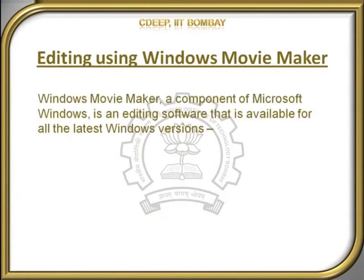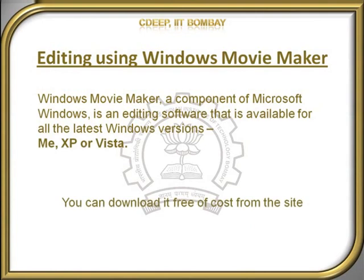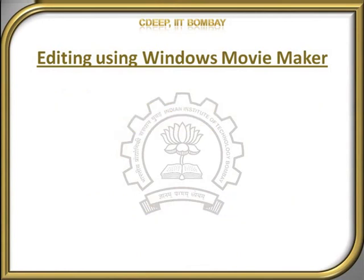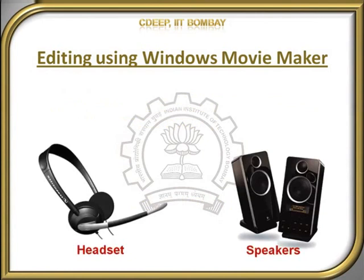Windows Movie Maker, a component of Microsoft Windows, is an editing software available for all the latest Windows versions: ME, XP, or Vista. If you do not have it on your PC, you can download it free of cost from www.microsoft.com/downloads. You will need a headset or speakers in order to listen to the audio of the movie clip.